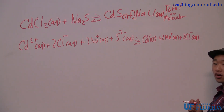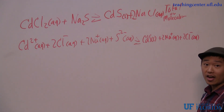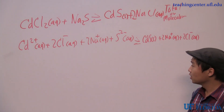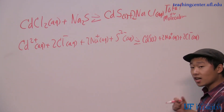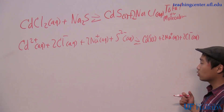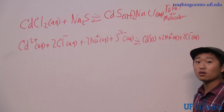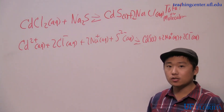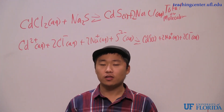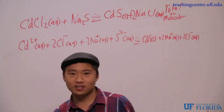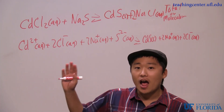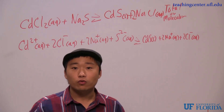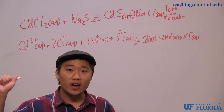That is your total ionic equation. However, this is not your net ionic equation. The net ionic equation shows the actual reaction that is occurring. When you have stuff in solution, they're just floating around and not reacting. However, some of the ions do react, which is why cadmium sulfide is formed.